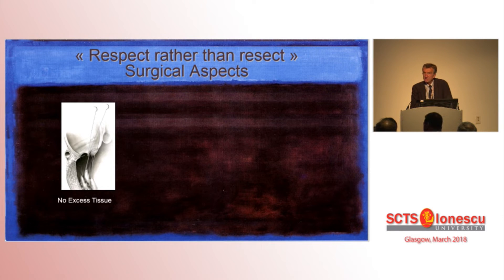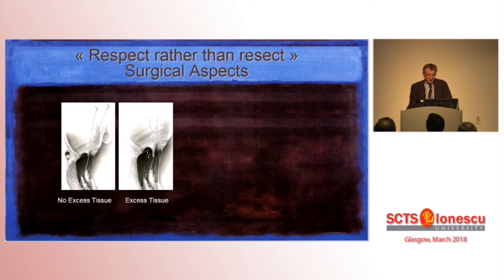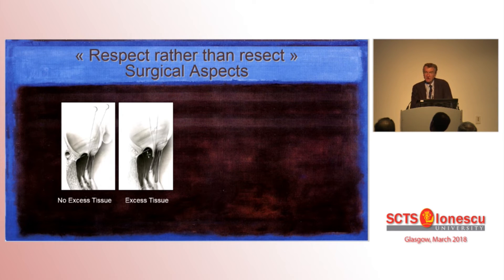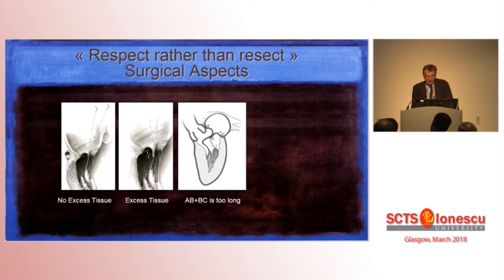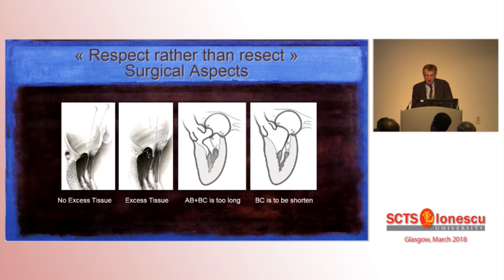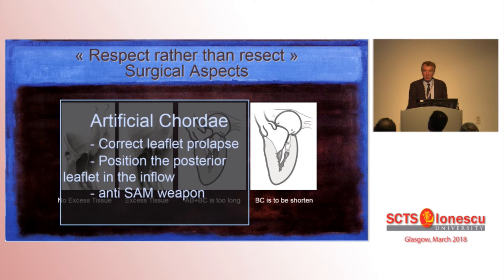Basically, you have two situations. One, when you have no excess of tissue — you bring the free edge of the prolapsed area with your Gore-Tex to the same level as the free edge of the reference point. If you have excess of tissue, you tie your Gore-Tex at a lower level to avoid SAM, because the distance AB plus BC is too long. To decrease that distance, you shorten BC and maintain the surface of coaptation in the inflow. So the artificial cordae not only correct the prolapse, but also position the posterior leaflet in the inflow.